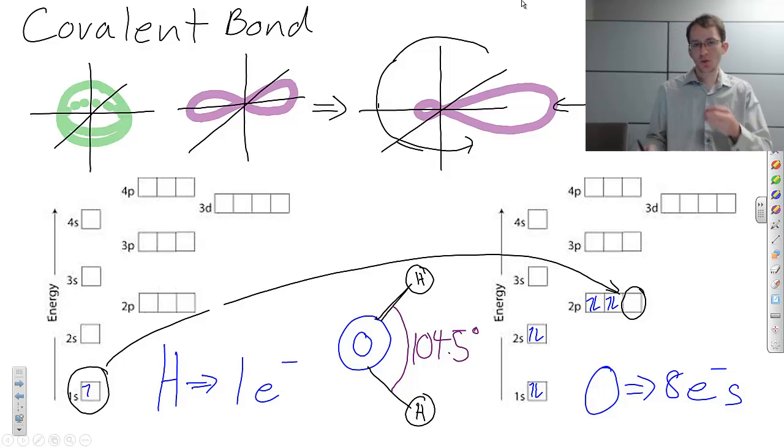Instead of the electrons being tied to an individual atom in ionic bonding, we have electrons that are tied to groups of atoms or pairs of atoms. And we call these molecules. So there's a huge difference between covalent bonds and ionic bonds, in that covalent bonds are directional, as shown by these bond angles.